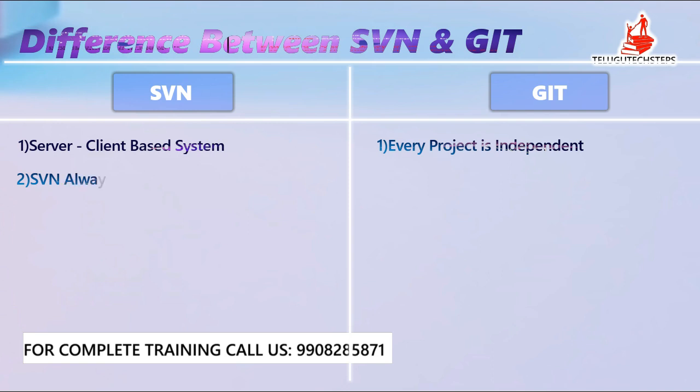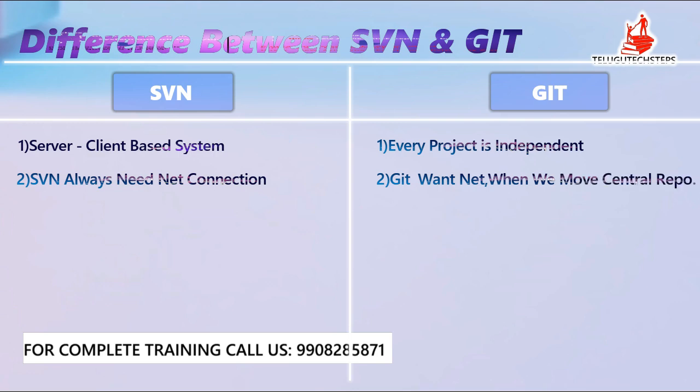Coming to the second point: when using SVN (Subversion), you need a continuous internet connection. Each and every developer must be connected to the internet to connect to the server, so updates and code changes are saved to the server. In Git, there is no need for a continuous internet connection — you only need internet when you push your finalized code to the remote repository.